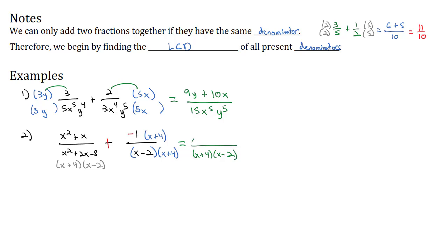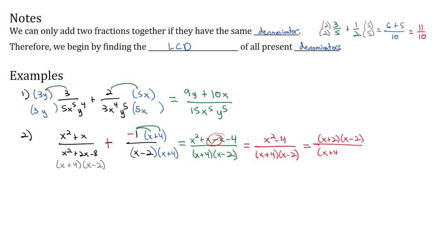In the numerator, the first fraction didn't change — it's x squared plus x. In the second fraction, I'm going to distribute the negative 1 through, giving negative x and negative 4, making sure that negative goes all the way through. Combining like terms, x minus x is 0, so that's gone, leaving x squared minus 4 over x plus 4 times x minus 2. Factoring the numerator gives x plus 2 times x minus 2, and the x minus 2 factors reduce out, leaving x plus 2 over x plus 4 as the final solution.